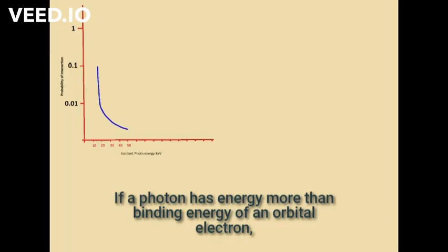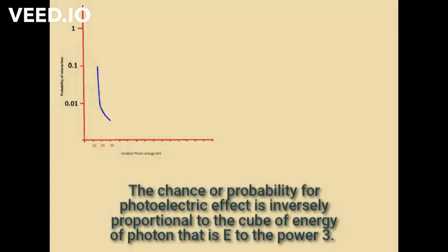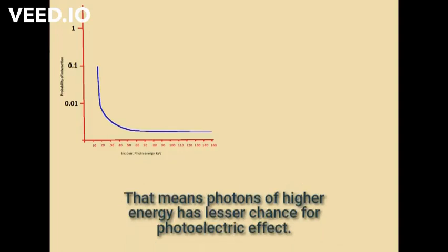If a photon has energy more than the binding energy of an orbital electron, it can interact through the photoelectric effect, but with a certain probability — not 100%. The probability for the photoelectric effect is inversely proportional to the cube of the energy of the photon, that is E to the power 3. This means photons of higher energy have a lesser chance for the photoelectric effect.